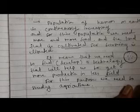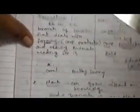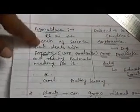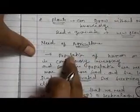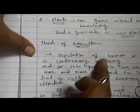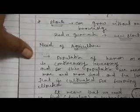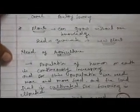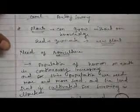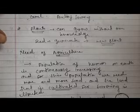In this video I have given two points: the first point is what is the meaning of agriculture, and the second point is what is the need of studying agriculture. These two points you have to write in the book.